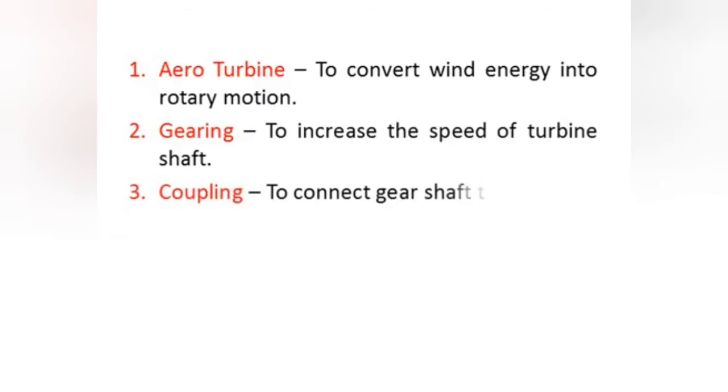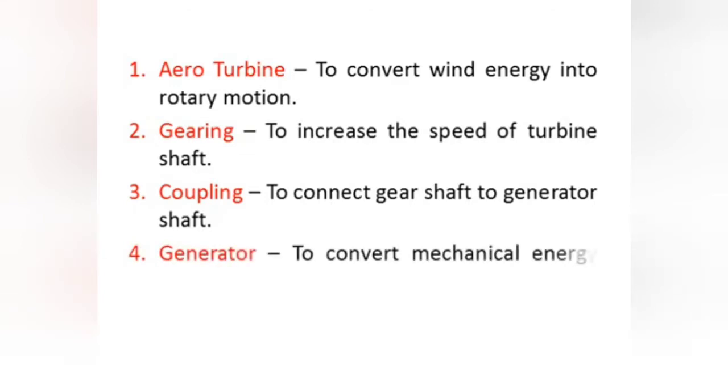Next component is coupling. As we know there are different types of coupling. The suitable coupling is used to connect the gear shaft to the generator shaft, so that the speed and torque of the gear shaft will be transmitted to the generator shaft.